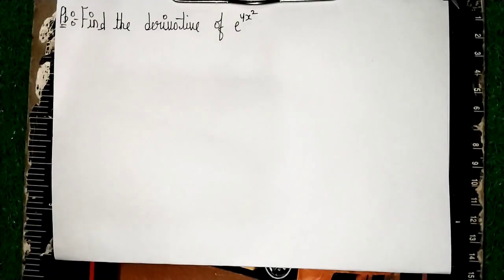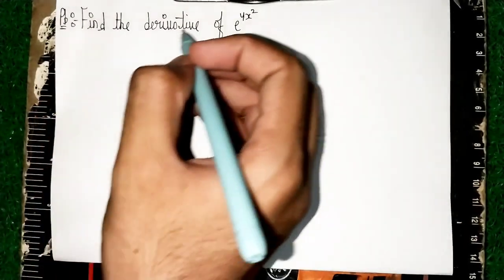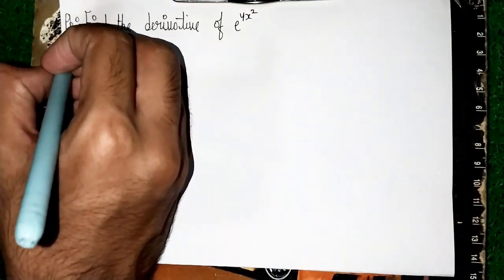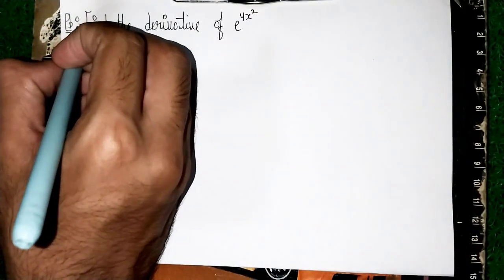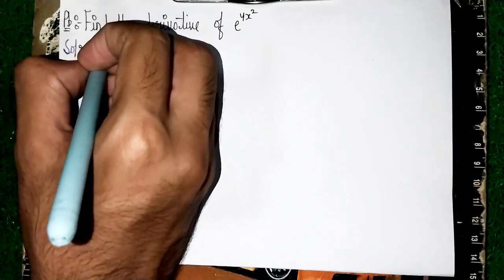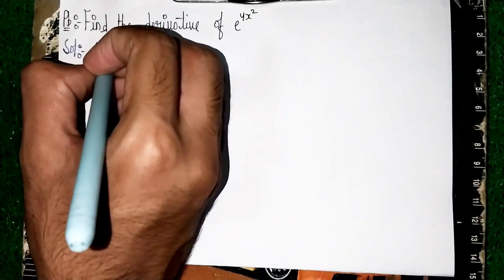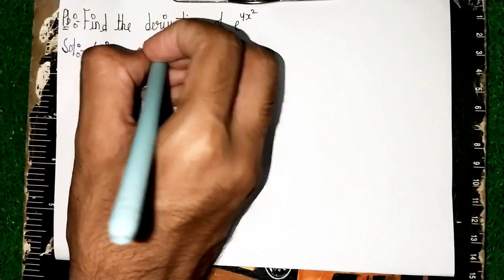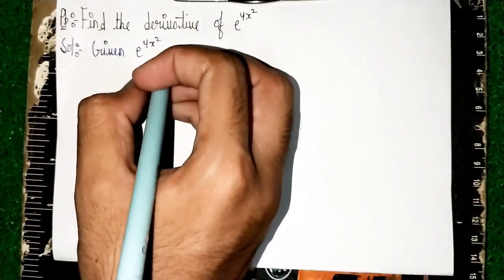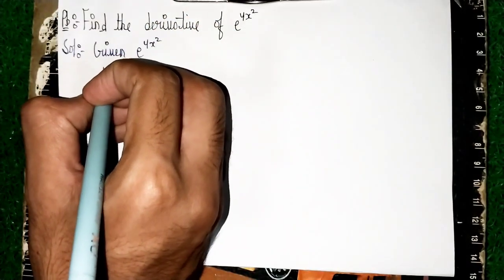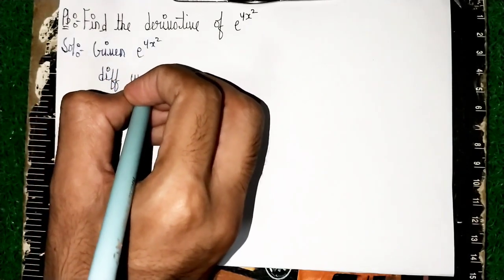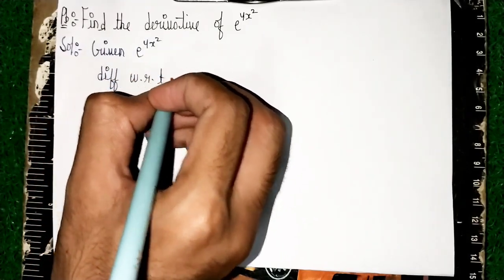Welcome back to my channel. In this question, find the derivative of e power 4x squared. Given: e power 4x squared. Now, differentiate with respect to x.